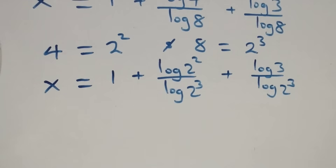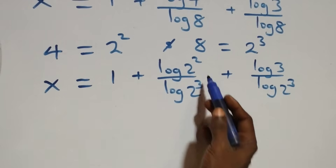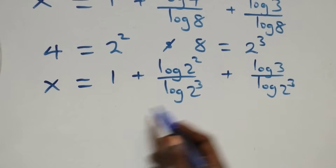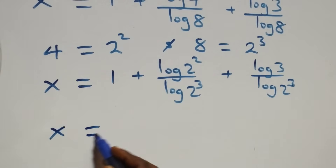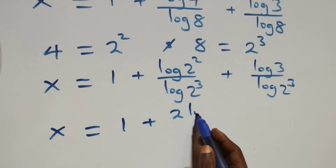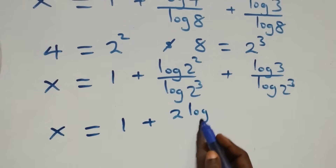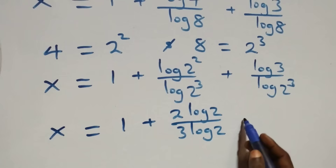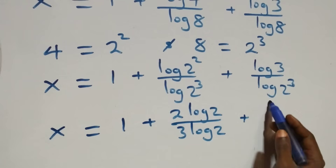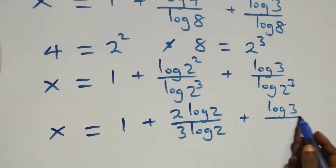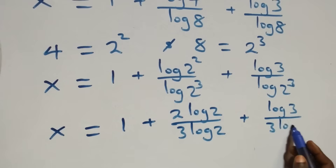Applying the power rule of logarithms, the exponents come down: x equals 1 plus 2 log 2 over 3 log 2 plus log 3 over 3 log 2.